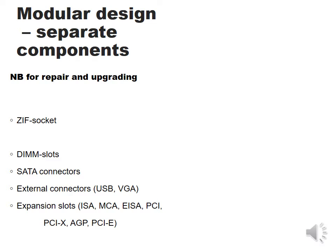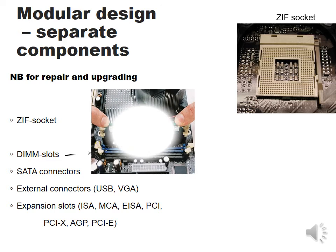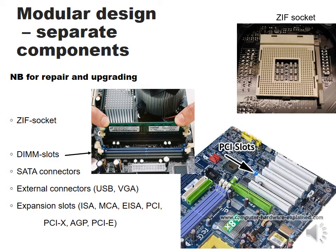First we need to look at all the sockets, slots, and connectors that make modular design possible. There's the ZIF socket, or zero insertion force socket, where your CPU plugs in. You can see the lever on the side which you lift up and then insert your CPU easily so the little pins don't get bent. Then there are the DIMM slots, or dual inline memory module slots, where your RAM plugs in. You also get SATA connectors for the hard drive, external connectors like USB and VGA, and expansion slots like PCI slots. There's also ISA, MCA, and EISA which are older technology, then PCI, PCI Express, AGP for your graphics card, and PCIe.